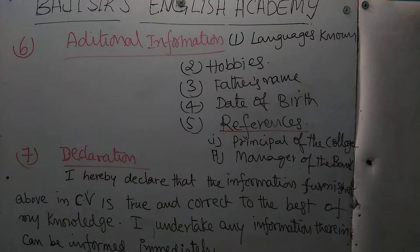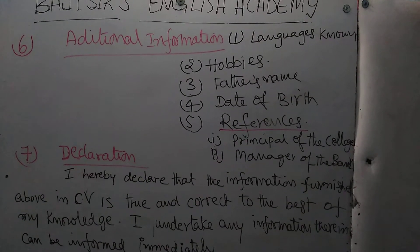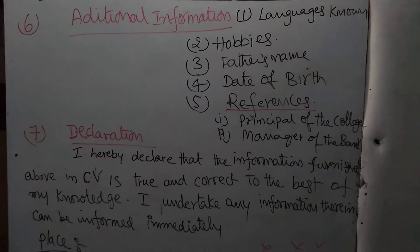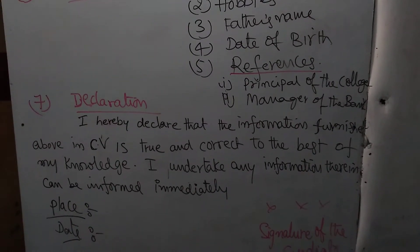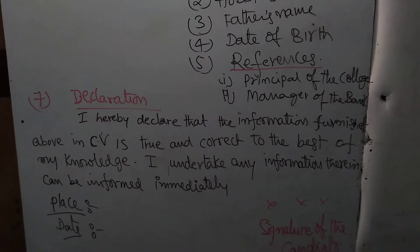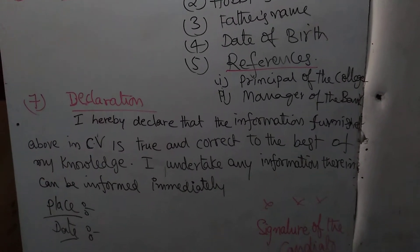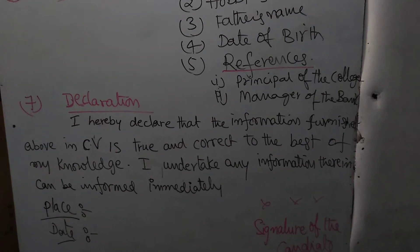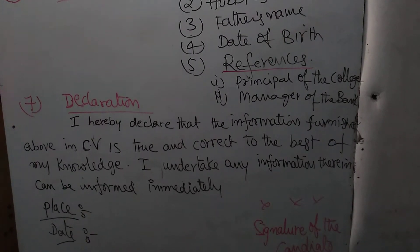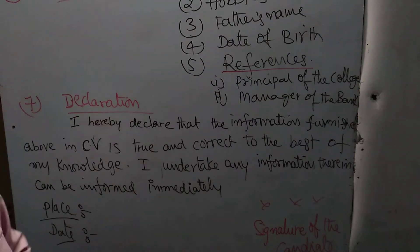My dear students, see here: declaration, place, date, signature — all these things you can mention. So there are seven types of things in the curriculum vitae.